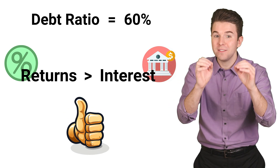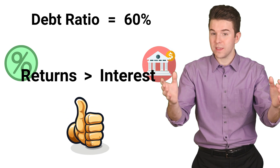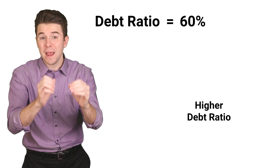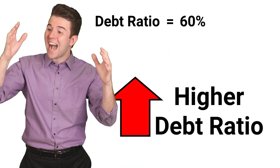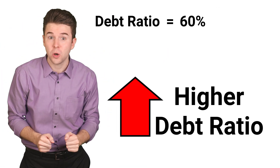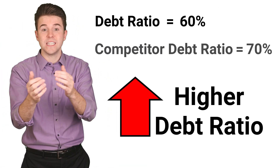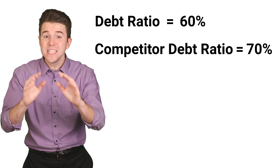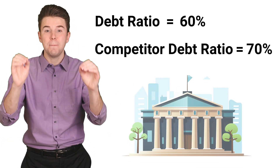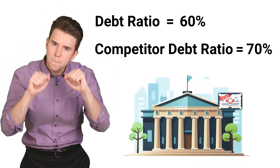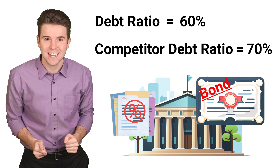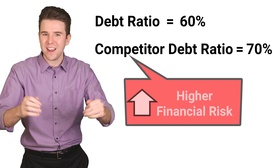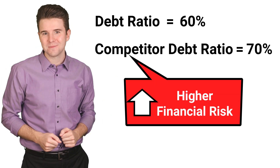We can also compare the debt ratio with competitors. If a competitor has a higher debt ratio of, say, 70%, this indicates that the competitor is more reliant on debt financing and may face higher financial risk.